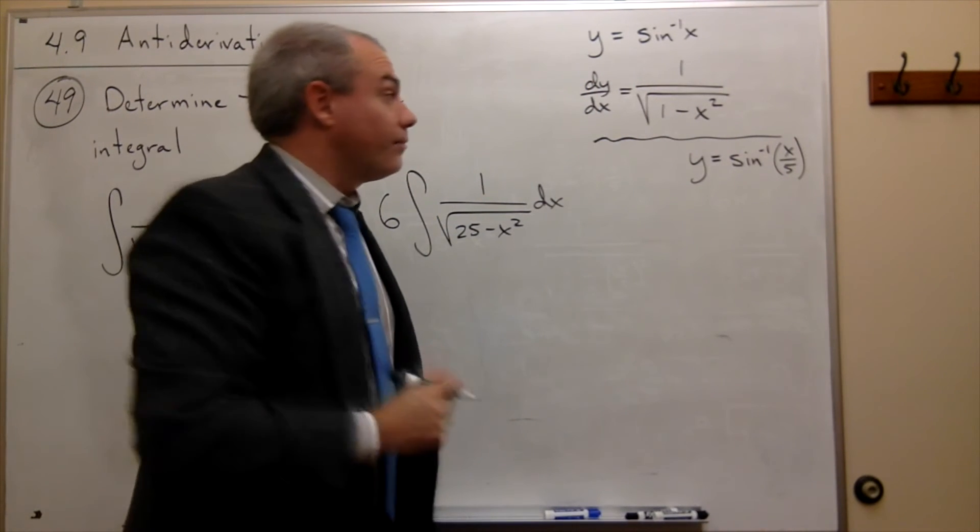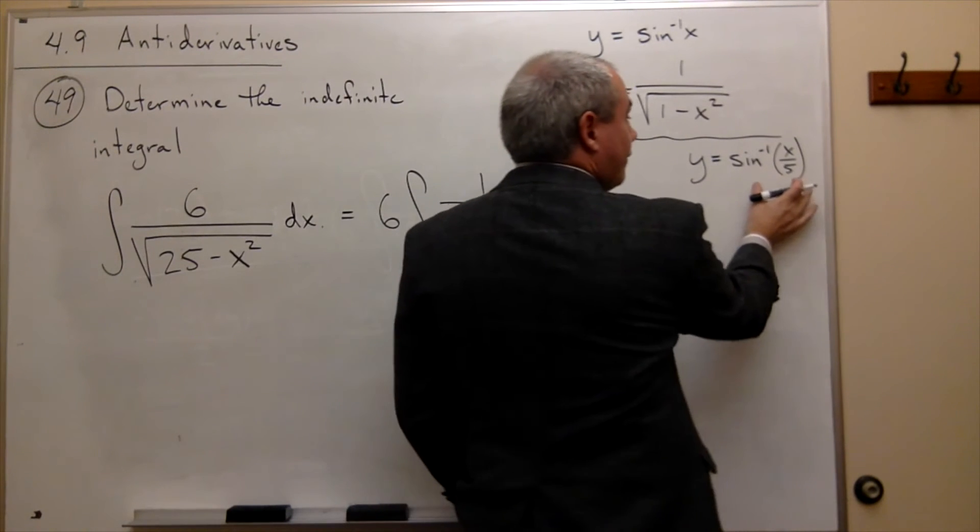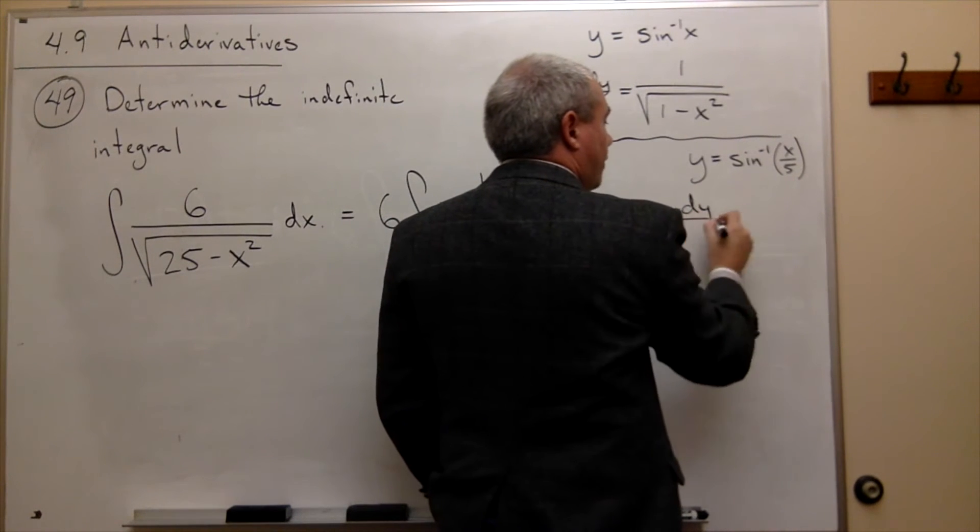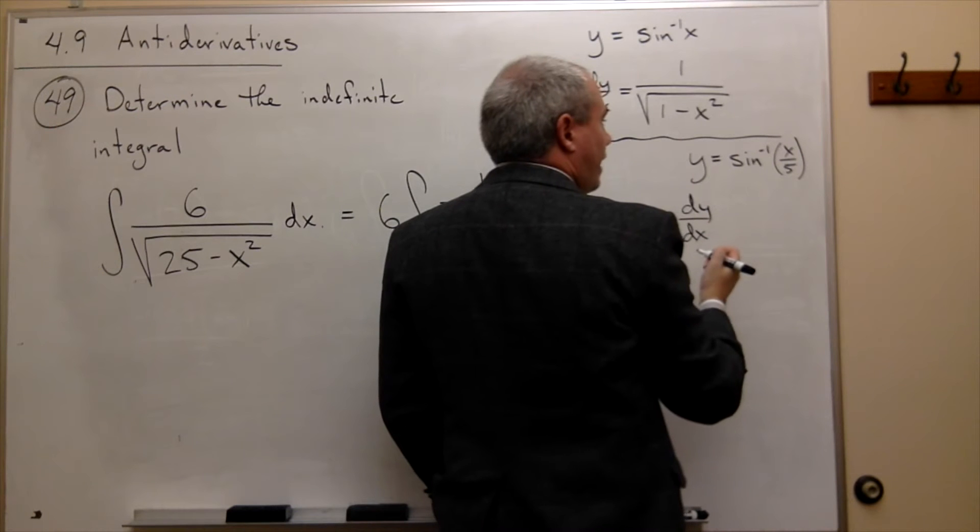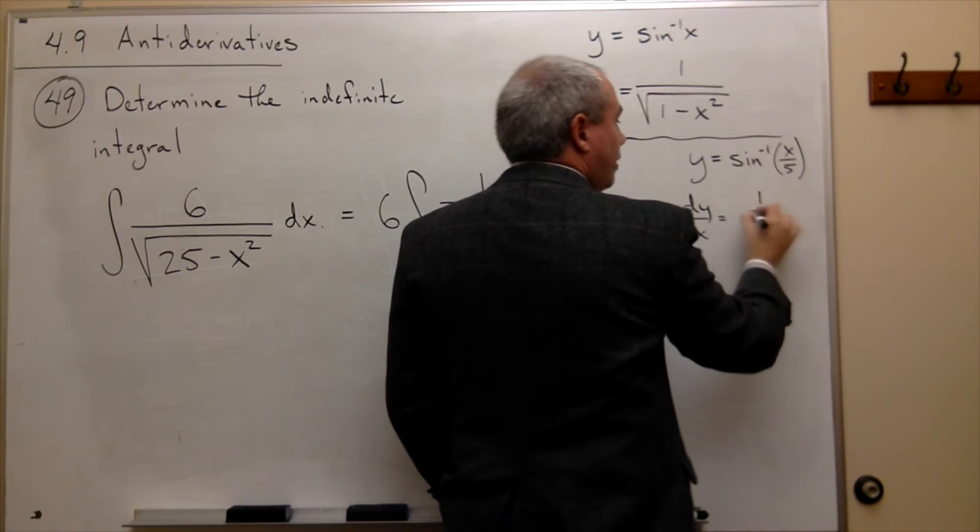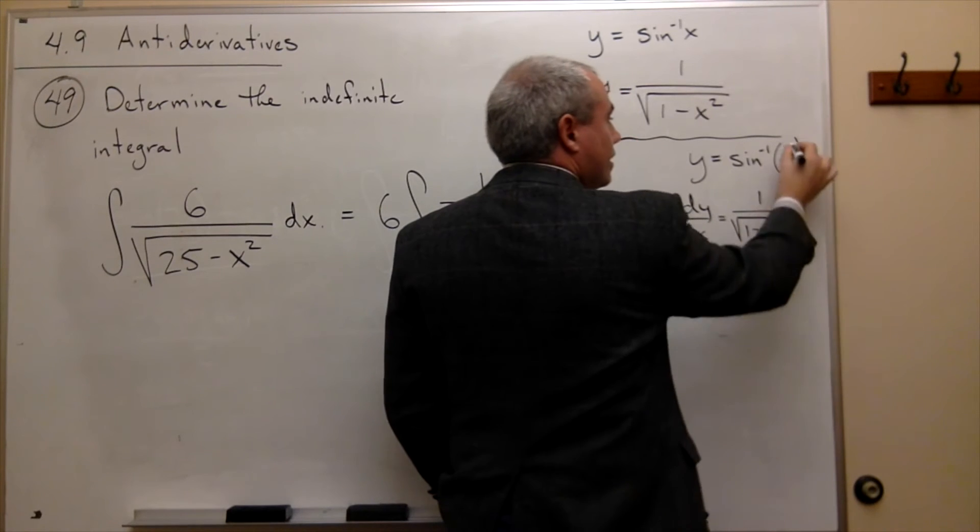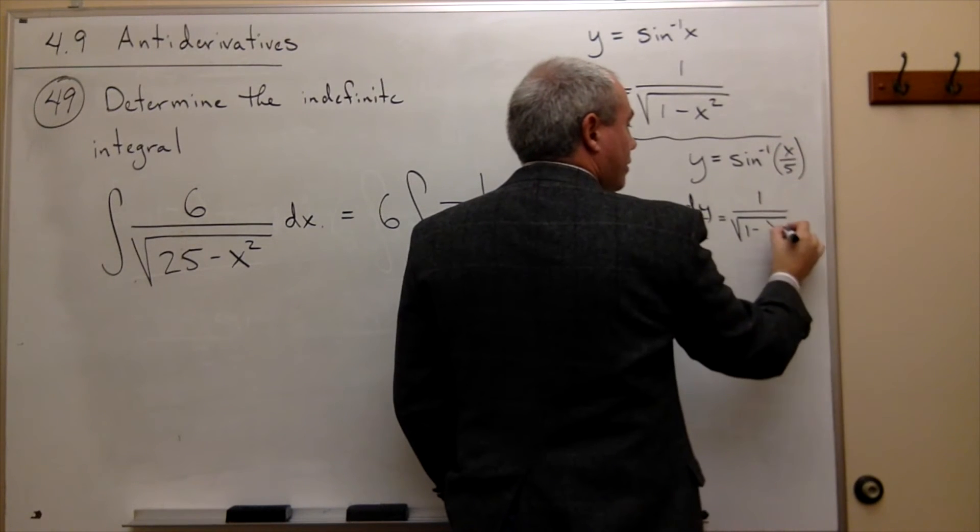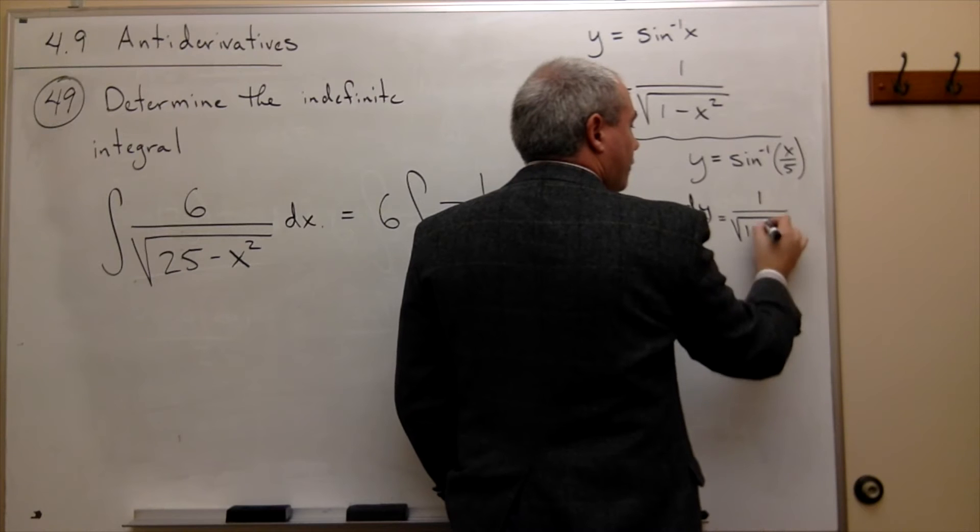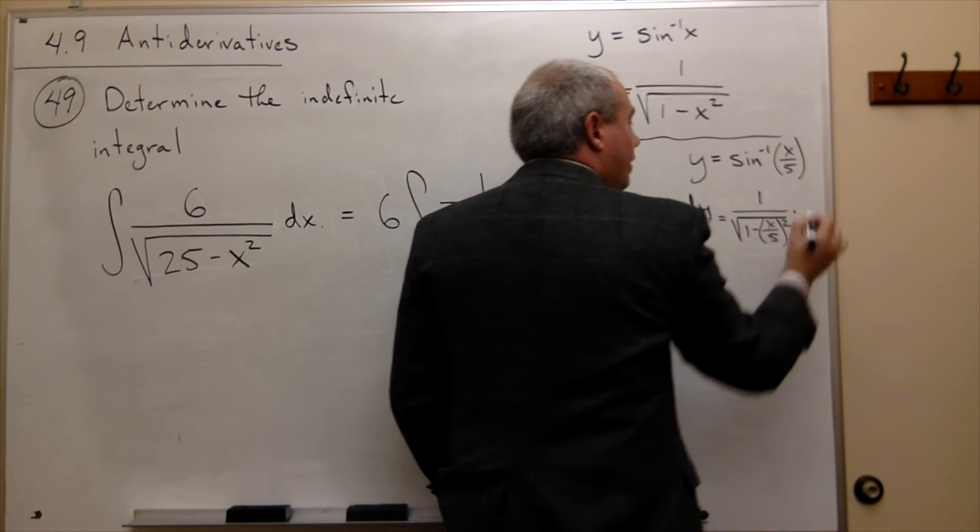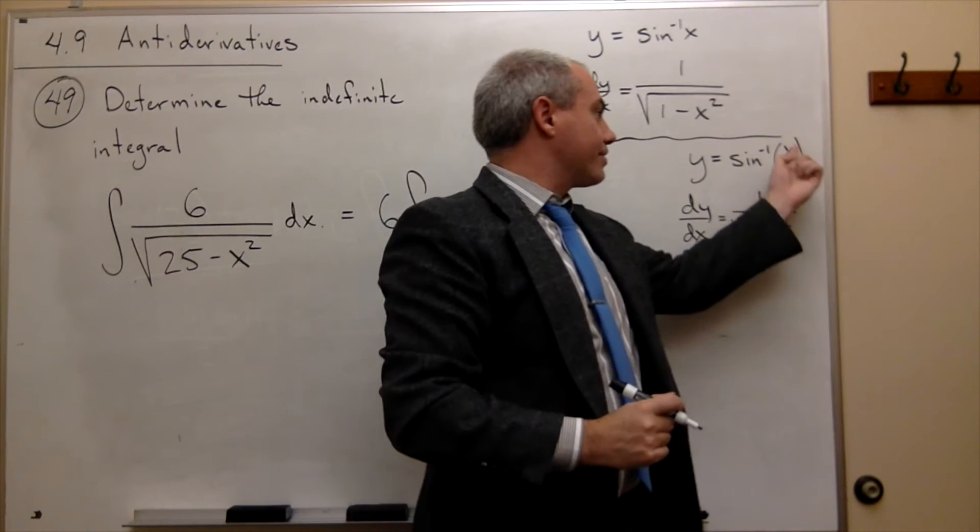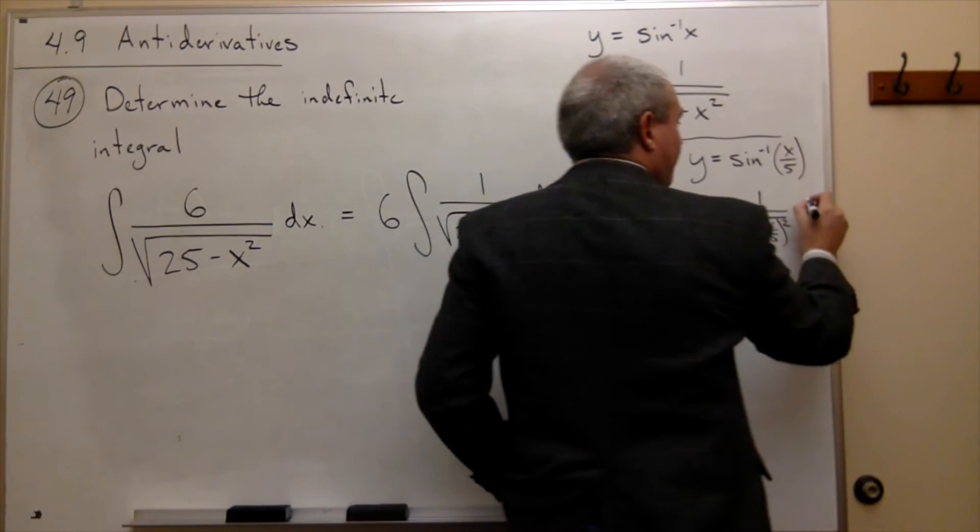All right? Now, if I took the derivative of this guy, I get dy/dx, and what would happen? Well, I get 1 over square root of 1 minus this thing squared. So it's x over 5 squared, but then I need to multiply that by the derivative of x over 5, which is 1 fifth.